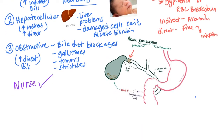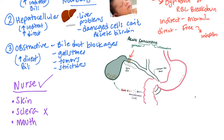To assess for jaundice, the nurse should check three places: the skin, the sclera, and the mouth. The sclera is the white part of the eyes. However, some dark-skinned ethnicities naturally have a yellow-tint sclera, so we cannot confirm with certainty that someone has jaundice just by assessing the whites of the eyes. For a dark-skinned person, we want to look in the mouth at the palates — the mucous membranes — which is the best place to check for jaundice.